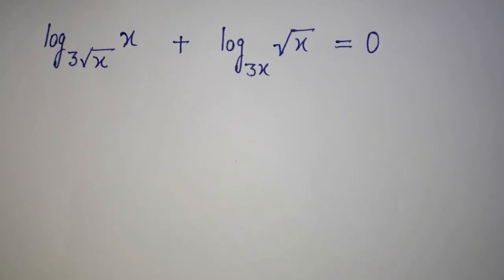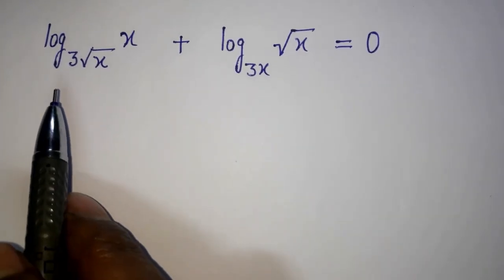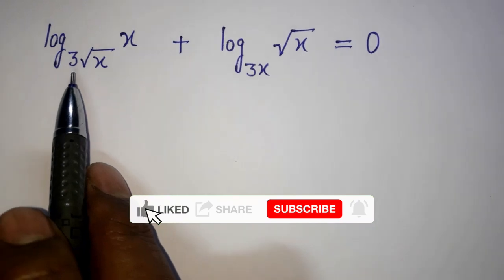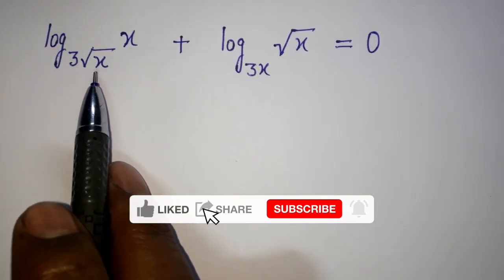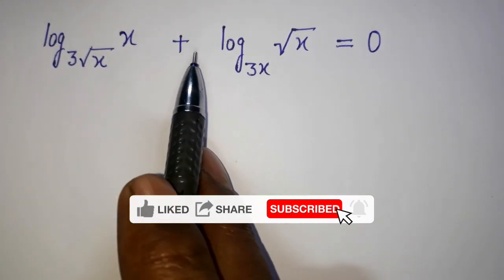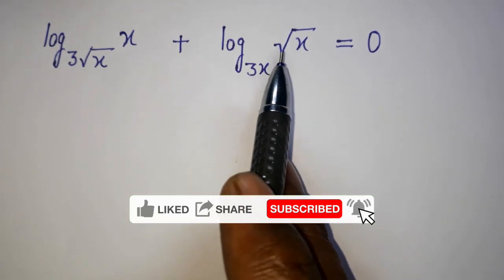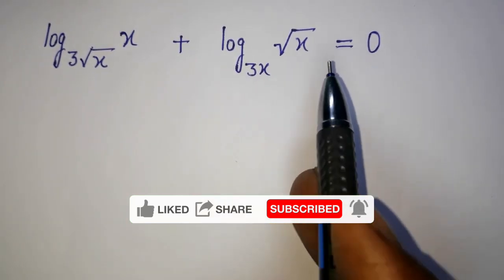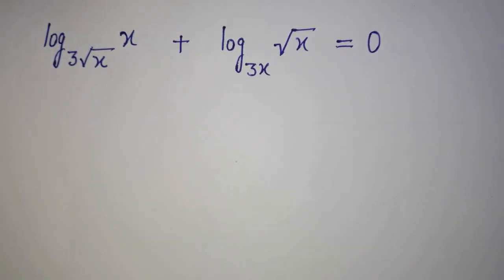Welcome back to Triple X Learning. Today we have this question: log base (3√x) of x, plus log base (3x) of √x, equals 0. We have to get the value of x that satisfies this equation.